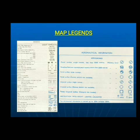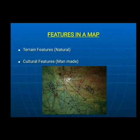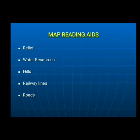Map legend: an explanation of the symbols shown on the map. Requirements for good map reading: good pre-flight planning, convenient flying parameters such as height, speed, and direction, paying attention to ETA (estimated time of arrival), and good orientation and anticipation. A map should show natural or terrain features as well as man-made cultural features. Relief, water, hills, railway lines, and roads make reading maps easier.